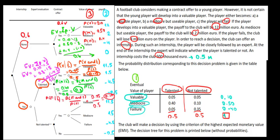That's the expected value if we offer him the contract — how much we expect to get in return for the club. If we don't offer the contract, then we only have the loss from the investment of the internship, which is minus 0.5. Since 1.9 is greater than minus 0.5, we would choose to give the contract. So the expected value of having a talented player is 1.9, because we choose to give him the contract.